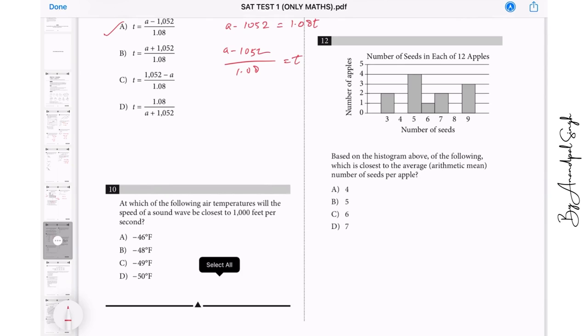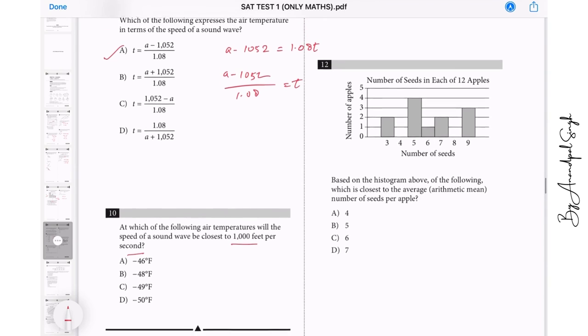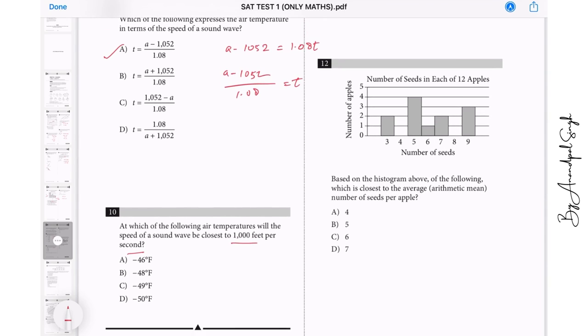Going to question number 10. At which of the following air temperature will the speed of sound be closest to 1000 feet per second? Speed of sound, that is h, is equals to 1000. What is the temperature? So 1000 minus 1052 divided by 1.08, so that will be minus 52 divided by 1.08. Since it's a calculator section, we can use our calculator, and we get it around minus 48.15.